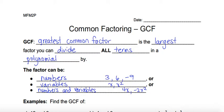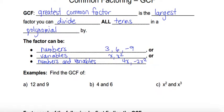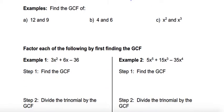We're going to look for the greatest common factor for each of these sets of terms first, before we look at how to factor using the greatest common factor. What is the largest number for part a that will divide evenly into both 12 and 9? It can't be any larger than 9 since that's the smallest number. The largest number that divides evenly into both is 3. You'll always have 1 as well, but the greatest common factor is 3 in this case.